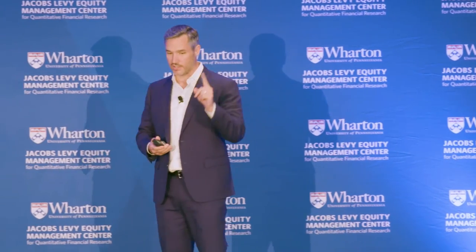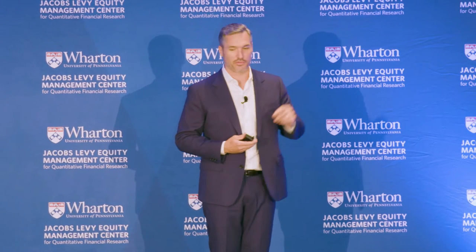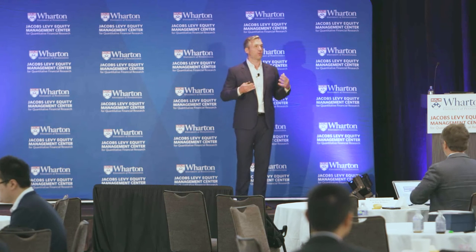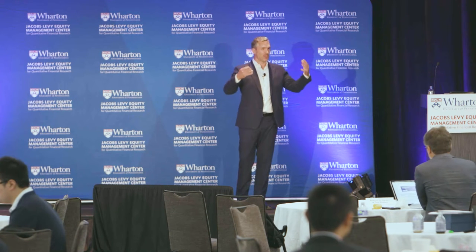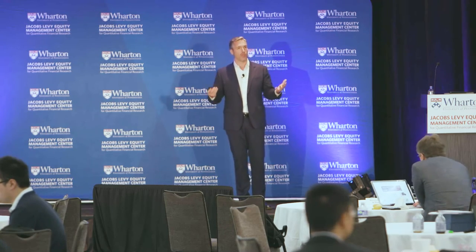They say this is their textbook rule number one — it's literally listed in chapter one. It says: it is important in practice that we employ the smallest possible number of parameters for adequate representation. I bring this up because I want to think about the way that we interact with research as being grounded in this way of thinking.